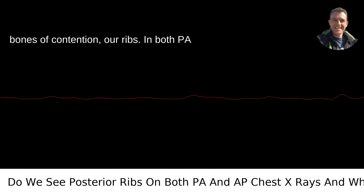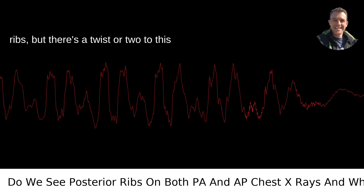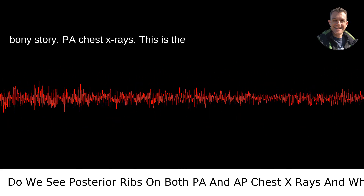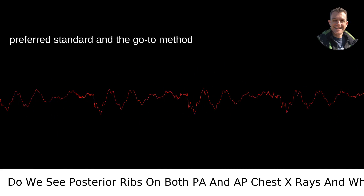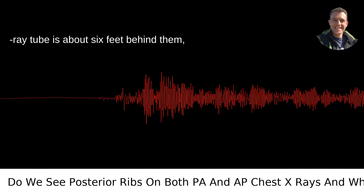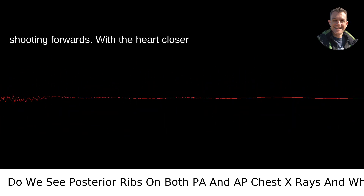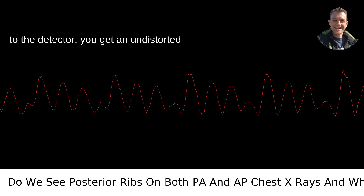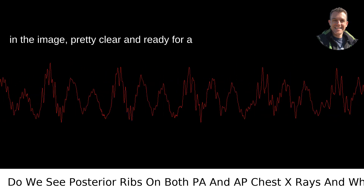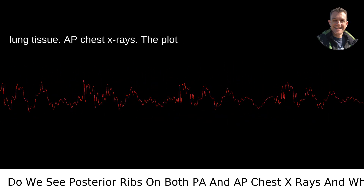On to the bones of contention — our ribs. In both PA and AP X-rays, you can indeed see the ribs, but there's a twist or two to this bony story. PA chest X-rays are the preferred standard and go-to method for many reasons. The patient stands facing a flat X-ray detector, and the X-ray tube is about six feet behind them, shooting forwards. With the heart closer to the detector, you get an undistorted, sharp image. The ribs stand sentinel in the image, pretty clear and ready for a head count, especially at the lung fields where they're superimposed over aerated lung tissue.